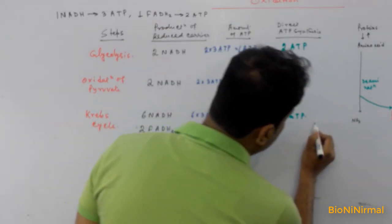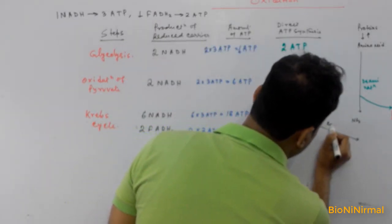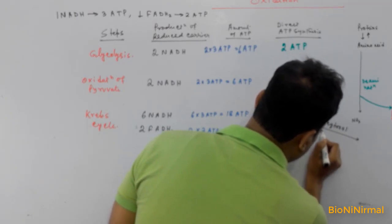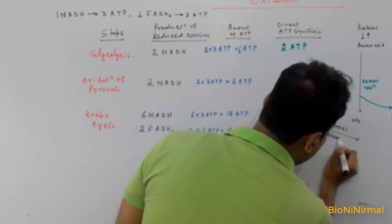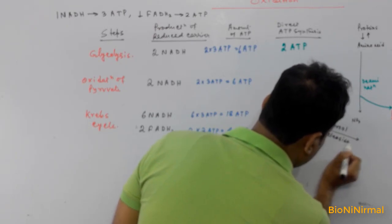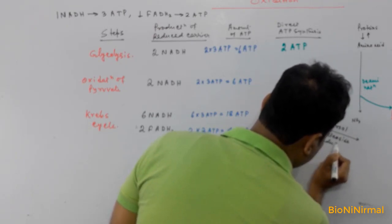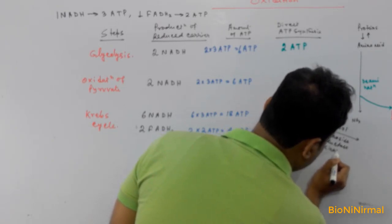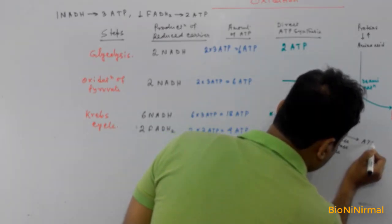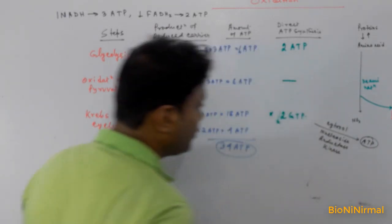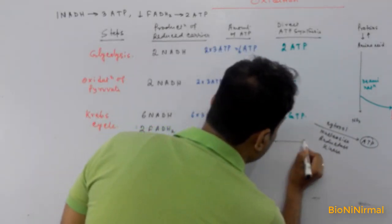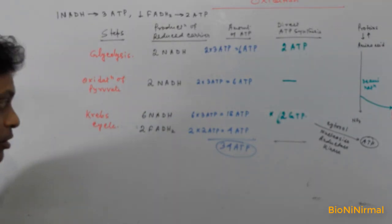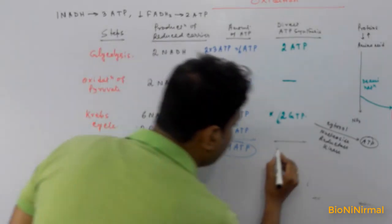The GTP molecules enter the cytosol and by the action of the enzyme nucleoside diphosphate kinase, these GTP molecules are transformed into ATP. So the two GTP from the Krebs cycle are regarded as two ATP. Therefore the total amount of ATP produced directly during glucose oxidation is four ATP — two from glycolysis and two from the Krebs cycle.